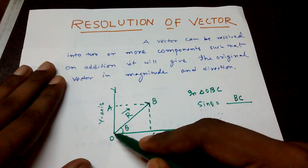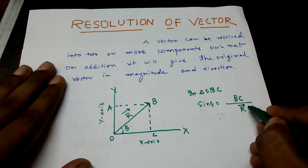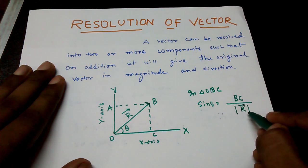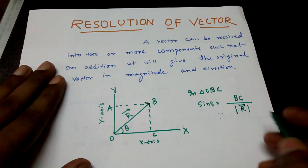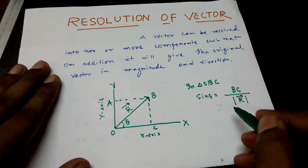And the hypotenuse, that is R. I am just taking only the magnitude, so I have put a mod over R. Now this is sin theta.